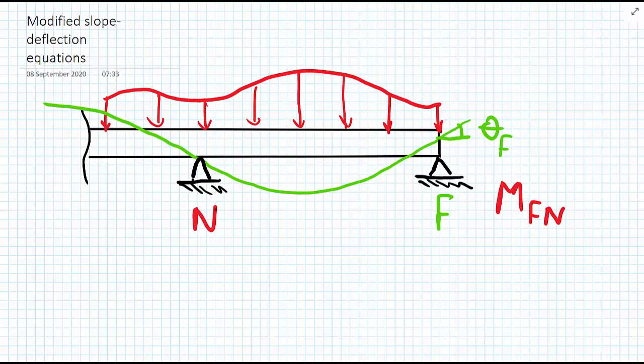In this situation, we know for definite that the moment at F pointing towards N (we're calling this end N) is equal to zero because we're at a pin support. We can exploit this fact and reduce the number of equations we need to solve if we know that we're not interested in the value of theta F. If we can relax our requirements on the number of displacements or rotations we require, we can speed up the solution procedure, and this is how the modified slope-deflection equations themselves are derived.